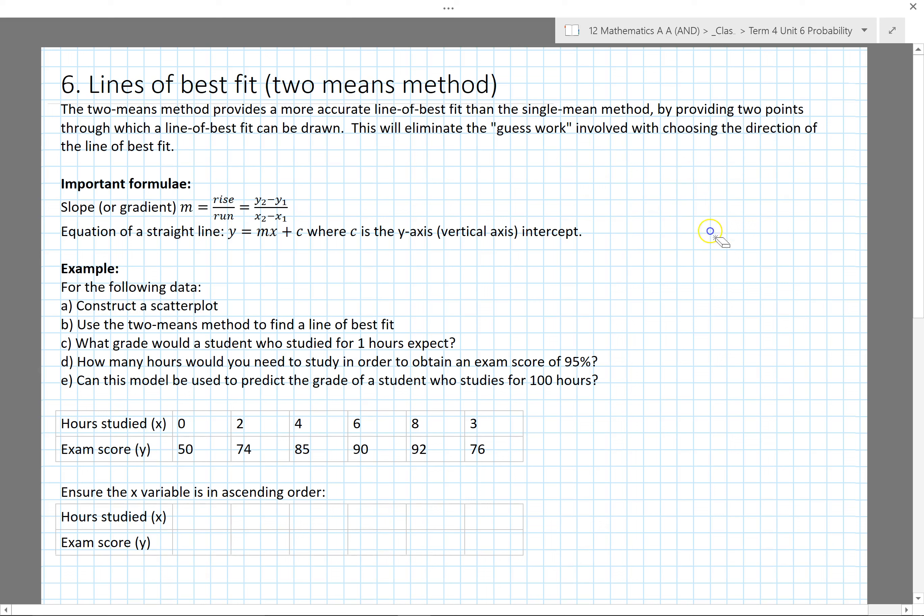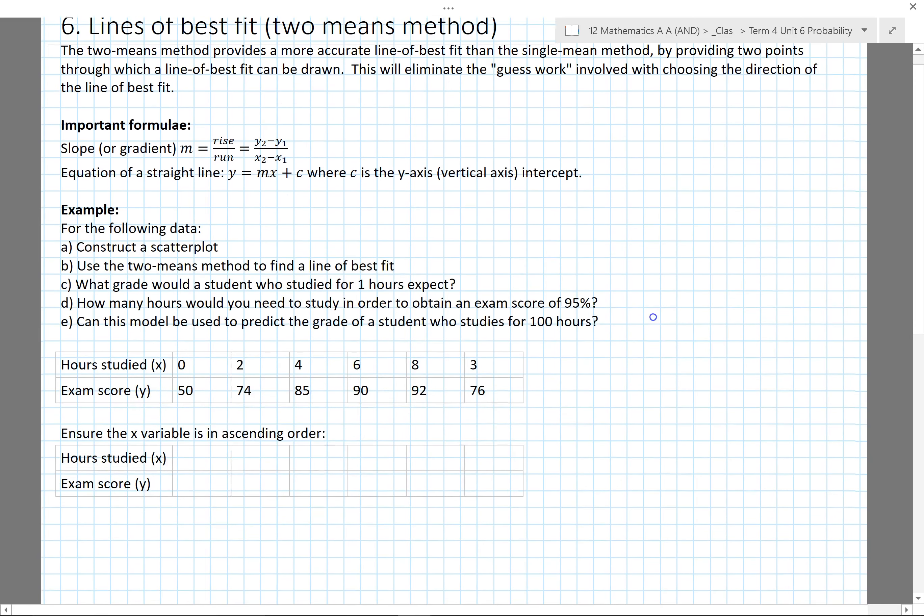Some things we need to remember for this lesson: how to find slope, rise over run, or the difference between the y coordinates of two points divided by the difference in the x coordinates. Our equation of a straight line is y equals mx plus c.